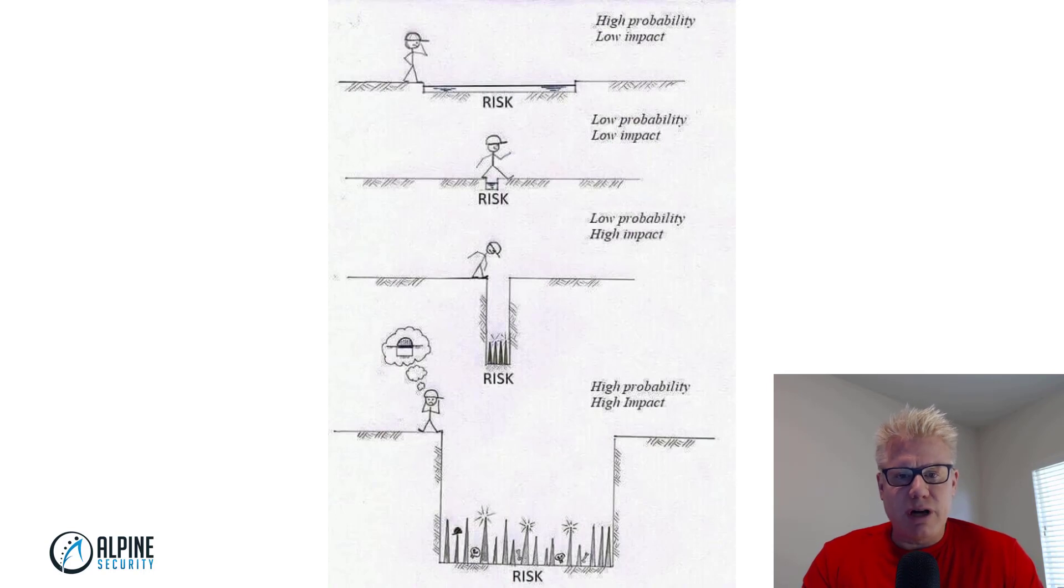This simple kind of cartoon does a pretty good job explaining what risk is. I think I found this on Cybrary. I'm not sure where they got it from. But the very first scenario here, we have a guy walking along with a baseball cap on. We have a ditch or a hole. It's a very long hole or ditch, but it's not very deep. So there's a high probability that this person will step into the hole, but since it's not very deep, it's a low impact.